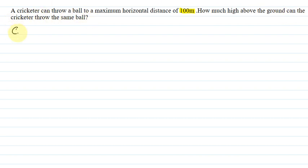So here we have the given data, which is R_max, the maximum horizontal distance, equal to 100 meters. With the help of this, we have to find the maximum height of the ball thrown by the cricketer.